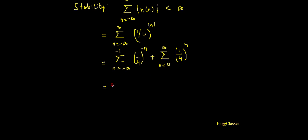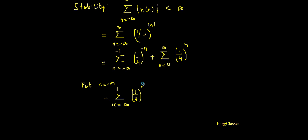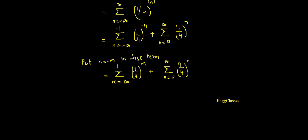To simplify the first geometric series, I substitute n equal to minus m. This transforms the lower limit from minus infinity to plus infinity and the upper limit from minus one to plus one. Inside, minus n is replaced by m, giving (1/4) to the power m. The second term is kept as is.